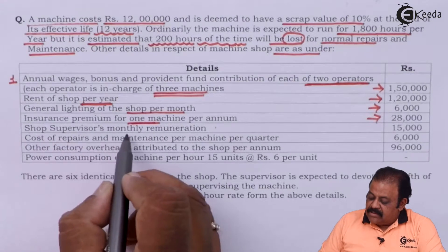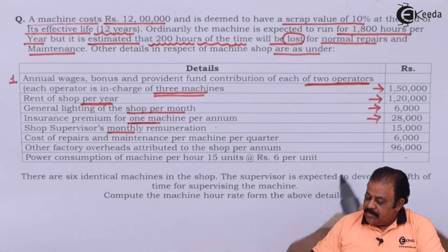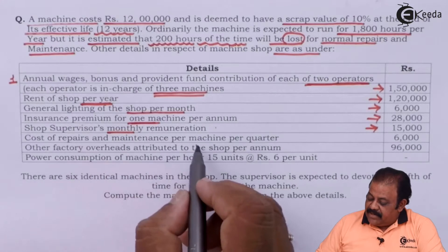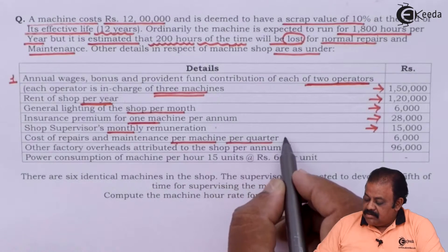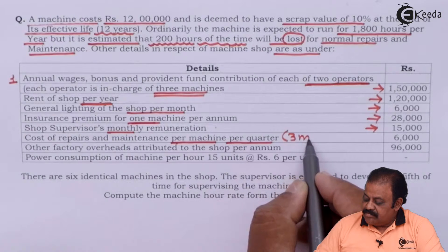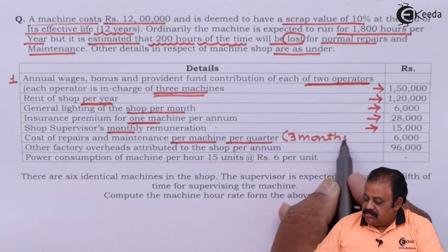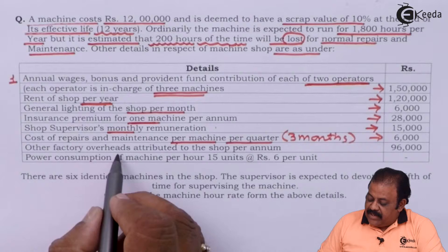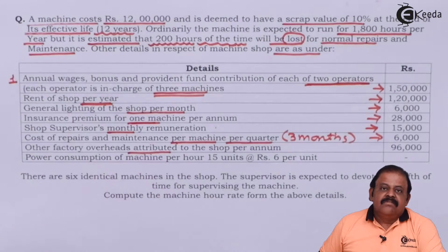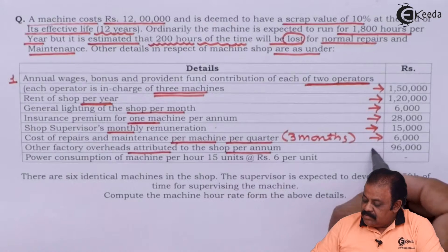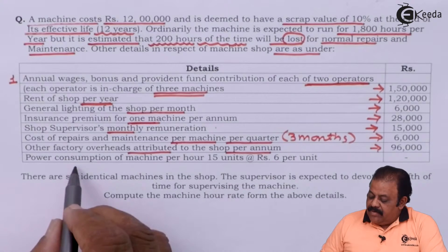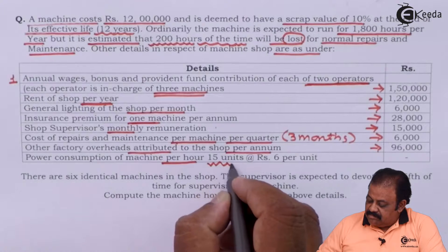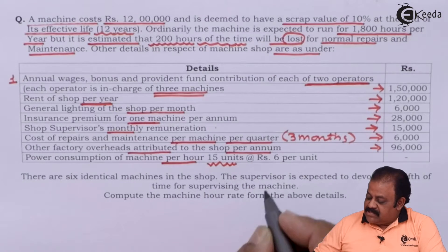Shop supervisor's monthly remuneration. Cost of repairs and maintenance per machine per quarter (three months): Rs. 6,000. Other factory overheads attributed to the shop per annum: Rs. 96,000. Power consumption of machine per hour: 15 units at the rate of Rs. 6 per unit.